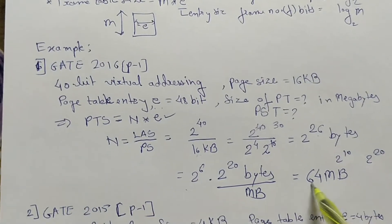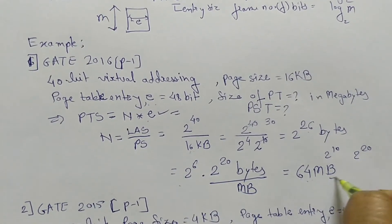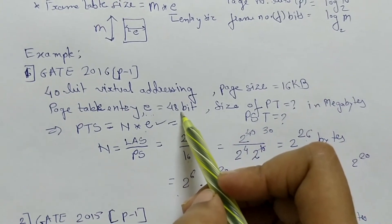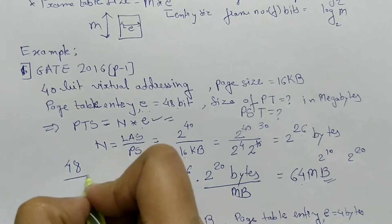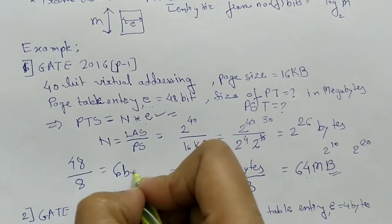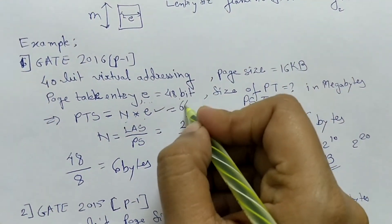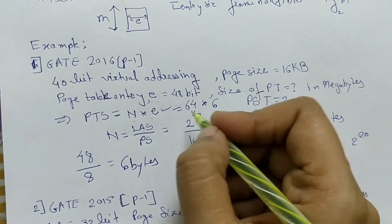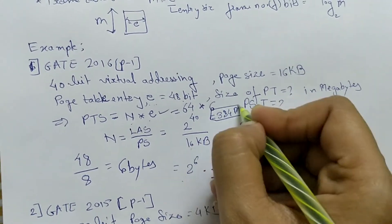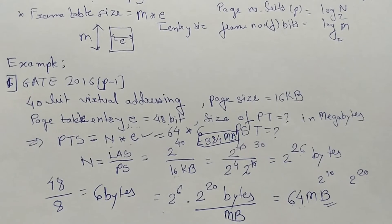Now we substitute this N value with small e. N is 64 MB, which is already in bytes form. But E is in bits form — 48 bits — so we convert: 48 divided by 8 equals 6 bytes. Therefore, page table size equals N into E equals 64 MB into 6 bytes, which gives 384 megabytes. The final answer for the page table size is 384 megabytes.